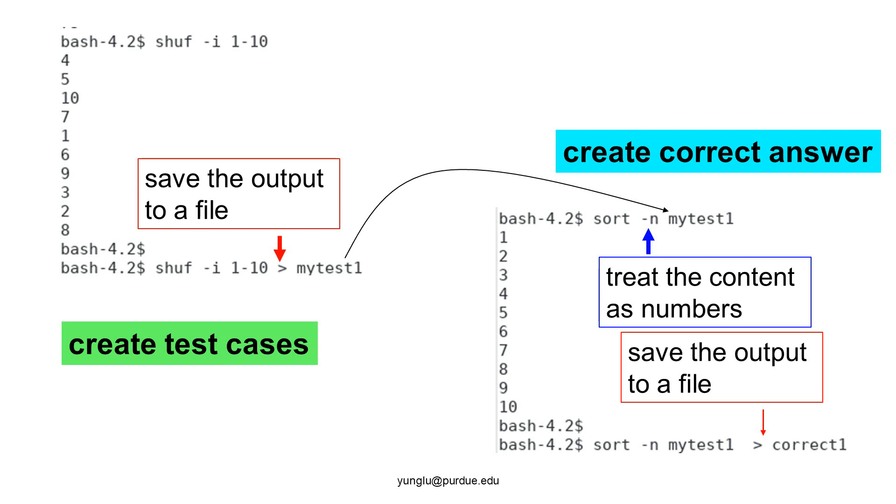For example, you can use the shuff command to shuffle numbers. In this example, we shuffle numbers 1 to 10. The output of the shuff command can be saved to a file by using the greater than sign.